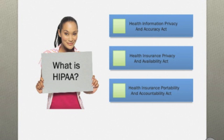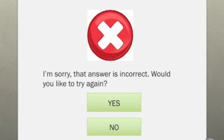The first part of the quiz asks questions relating to specific HIPAA privacy and security issues. To answer these questions, click on a green action button. If you answer the question incorrectly, you'll see a slide asking if you want to try again.